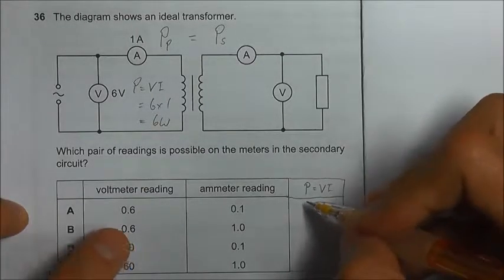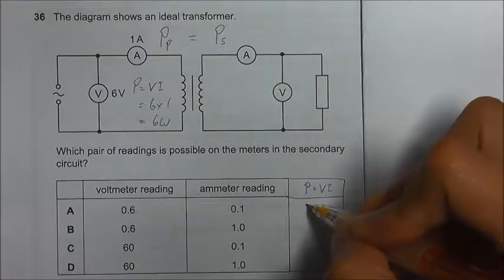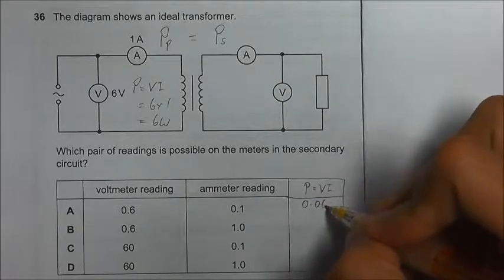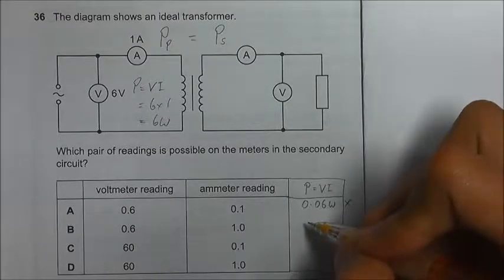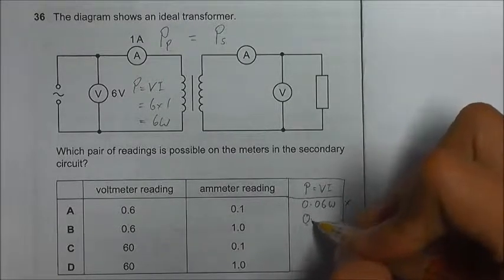Option A will give us 0.6 times 0.1, we get 0.06 watt, so this is not the answer. Then option B, 0.6 times 1, we will get 0.6 watt, so not the answer.